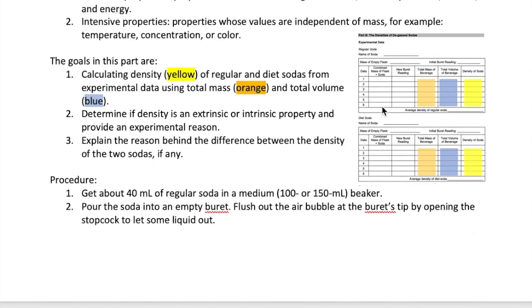Once you have 6 data points, which is about 30 milliliters of soda, you can continue to the next table, which is doing the same steps but using diet soda as the substance.